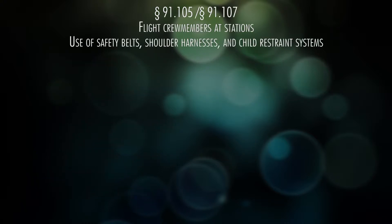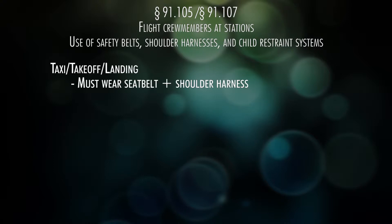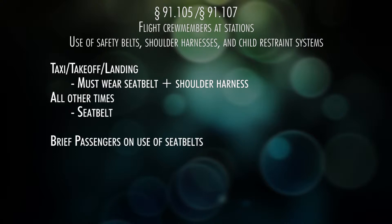I will combine 91.105 and 91.107 into one blurb. Basically it comes down to seat belts and shoulder harnesses. During taxi, takeoff, and landing you need to have the shoulder harness on. All other times the seat belt has to be on. And if you have passengers, you have to tell them to put their seat belt on.